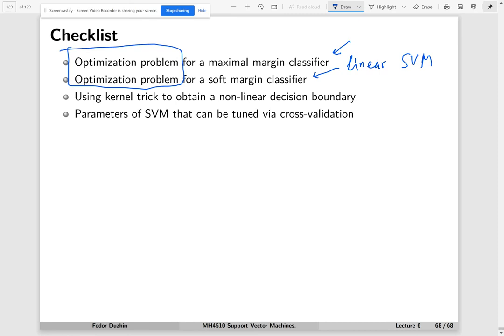Optimize, find the minimum of some quadratic function subject to linear constraints. And then soft margin classifier plus kernel trick equals SVM, nonlinear SVM.